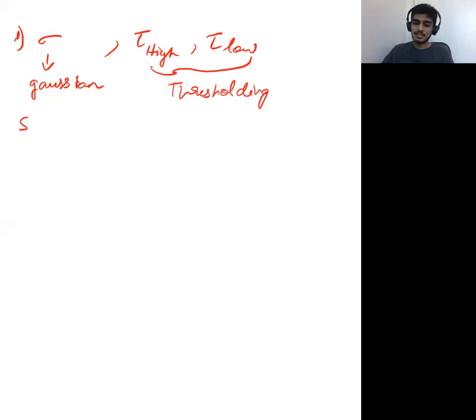Let's go to the steps of Canny edge detection algorithm now. Basically the first step is smoothing of the image.